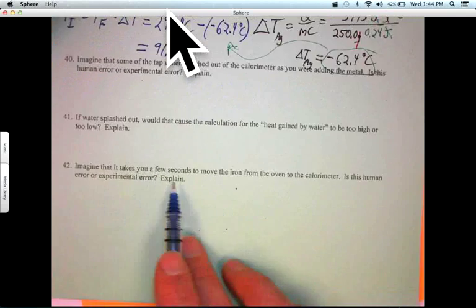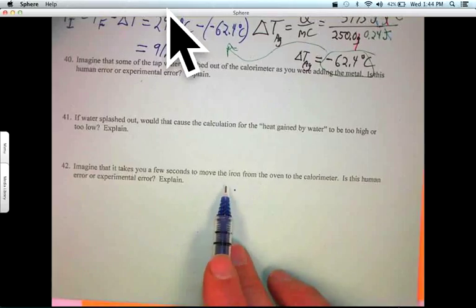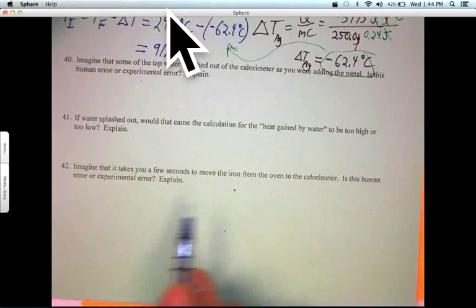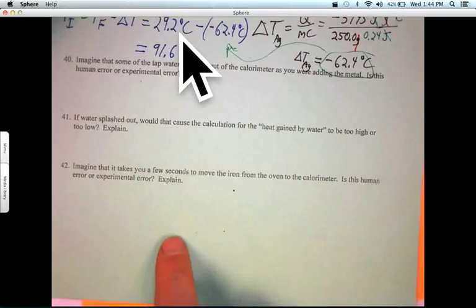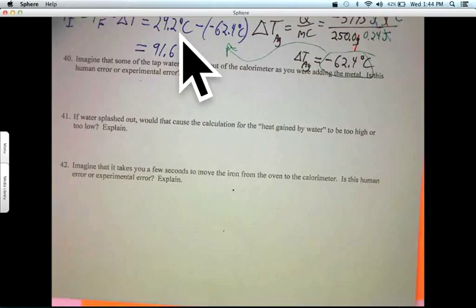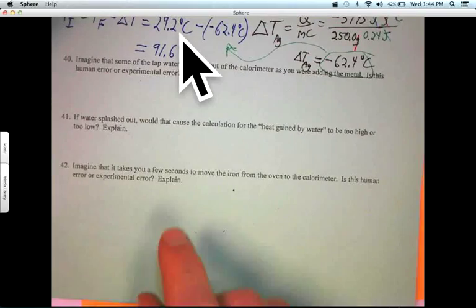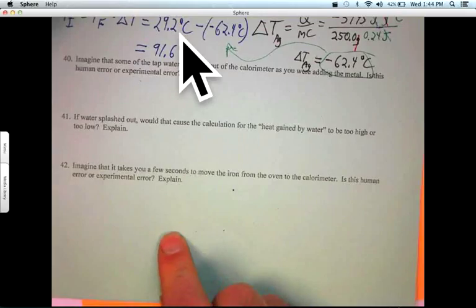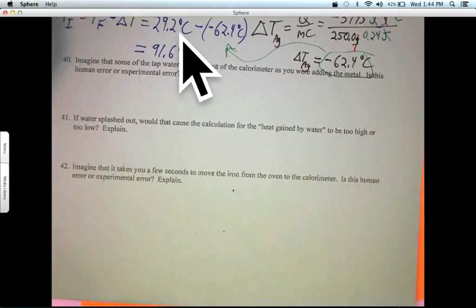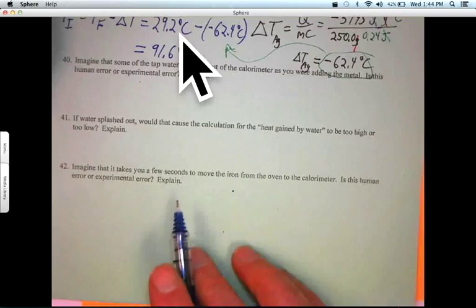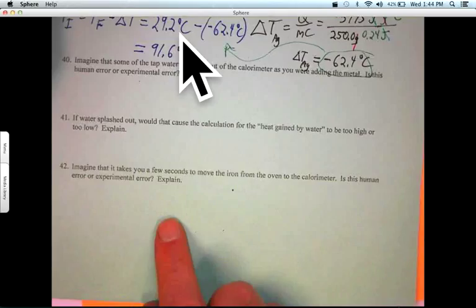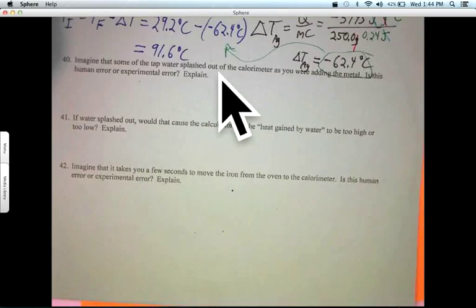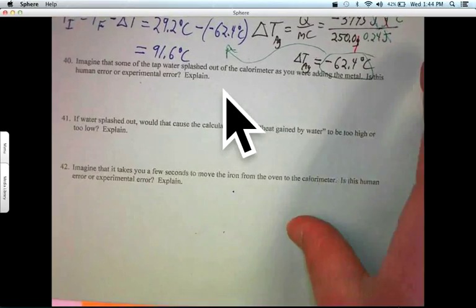Imagine it takes you a few seconds to move the iron from the oven to the calorimeter. Human error or experimental error? Well, you could argue that that's necessary, but it's hard to imagine it taking a few seconds. You want to do it as quickly as possible. And certainly, a styrofoam cup calorimeter can be moved within arm's reach of the oven. So I would vote for human error, but you could argue either way. You want to be very safe and slow.